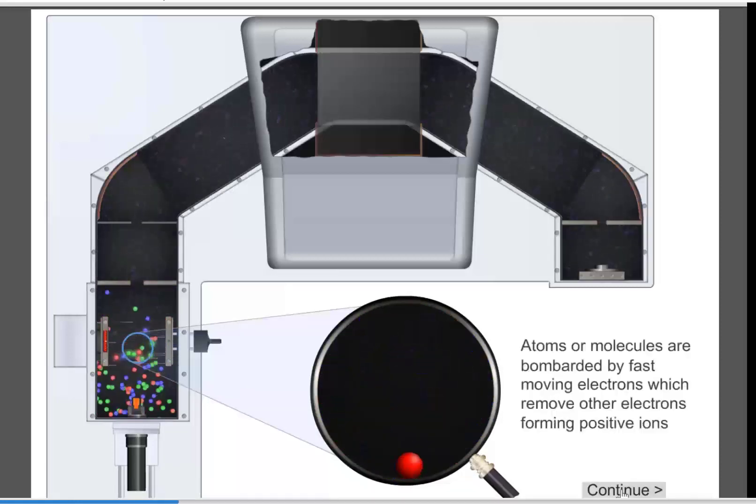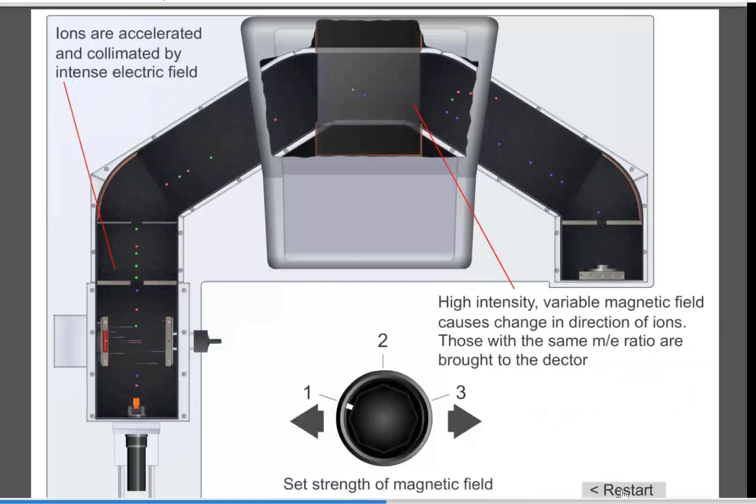Here we see a high-energy electron knock out an electron from the molecule, forming the molecular cation. This simulation does not show further fragmentation, but because we have molecular ions of different mass, we can see how they behave in the tunnel.